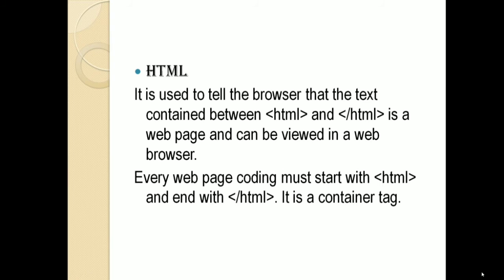We are going to discuss the four types of HTML tags and the first one is called HTML. The HTML tag is used to tell the browser that the text contained between the opening tag and closing tag of HTML is a web page and can be viewed on a web browser. Every web page coding must start with the HTML opening tag and end with the closing tag of HTML. It is a container tag.